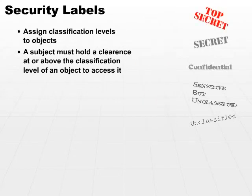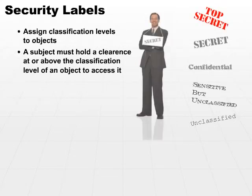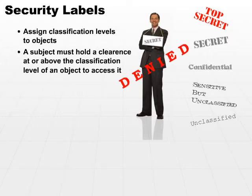Let's look at another example. What if you have a security clearance of secret, you being the subject, and you're trying to access an object that has a security label of top secret? Since your security clearance is below the security label of the object you're attempting to access, the access will be denied. An object classified at a level above the subject will deny any access attempts by that subject. If your clearance is below the object's security label, you're not going to be able to access the object.